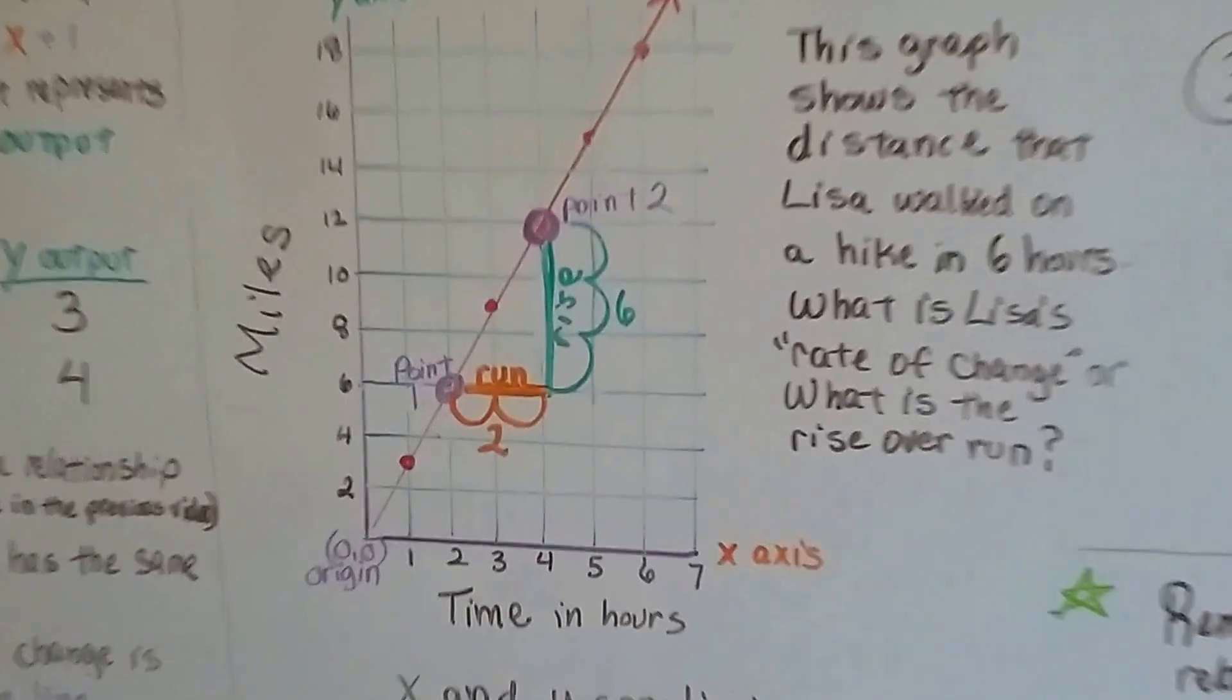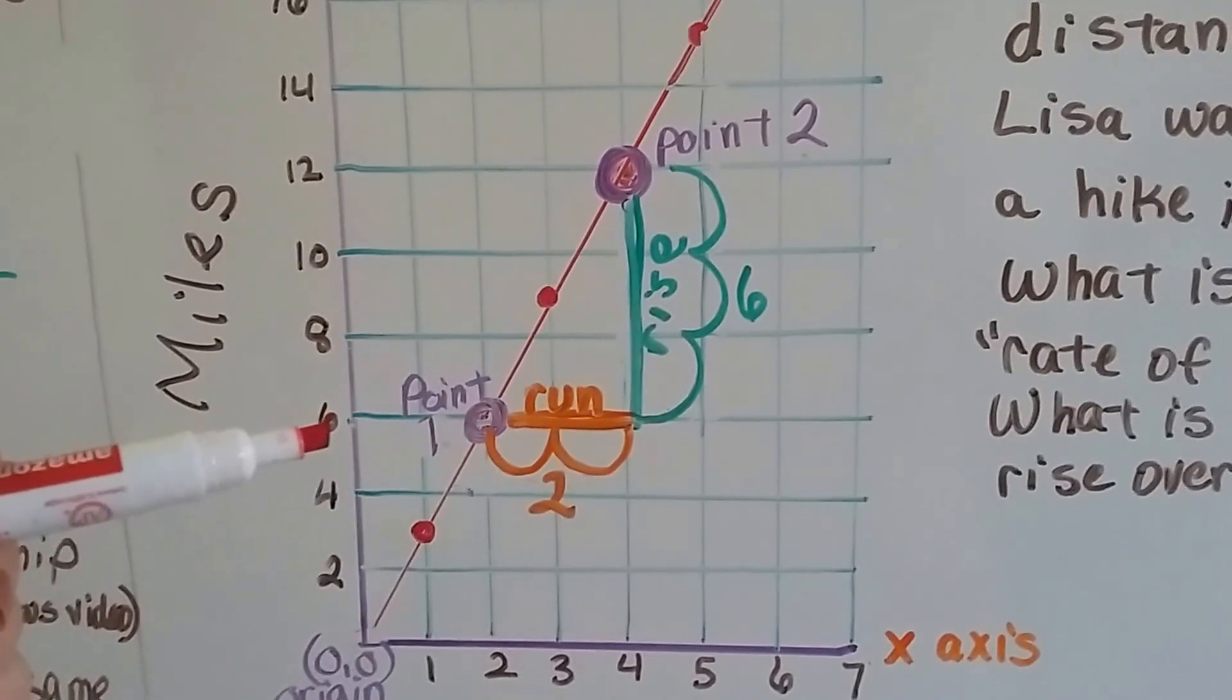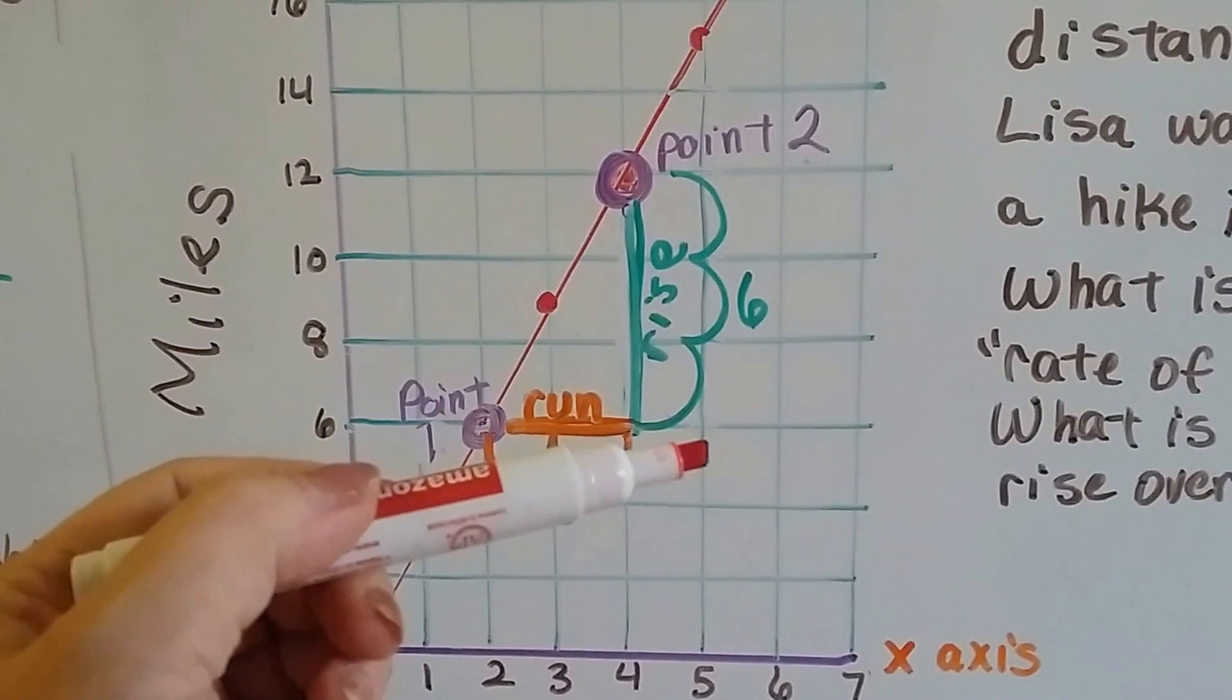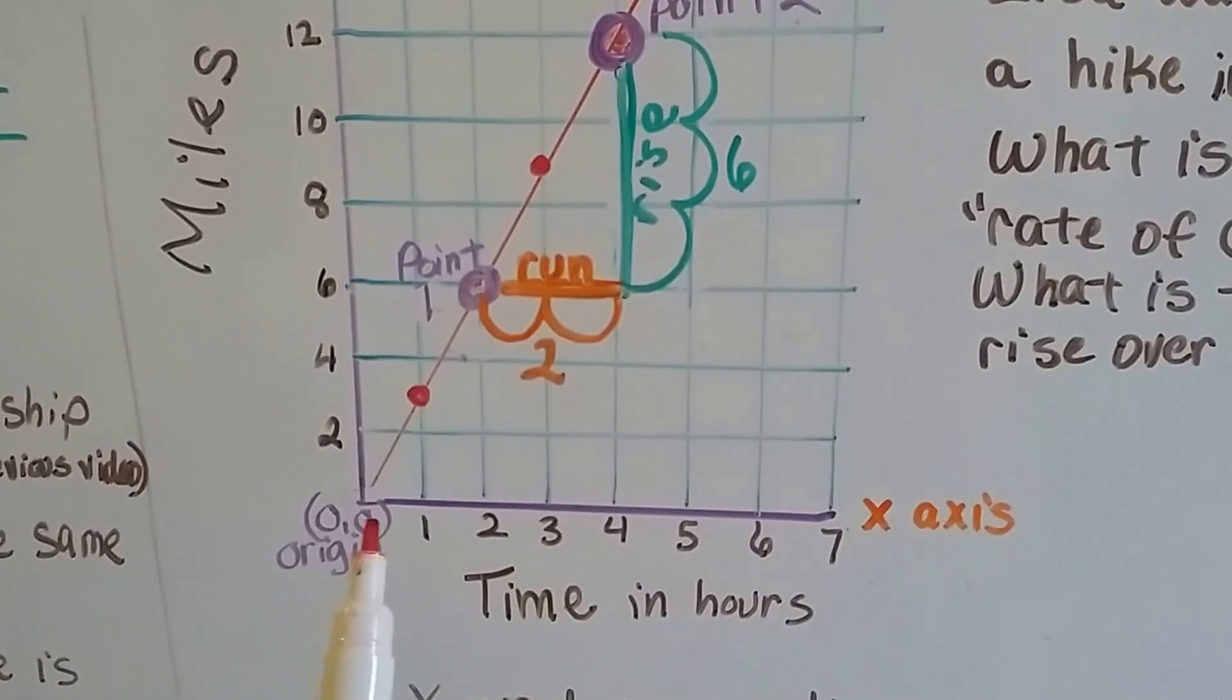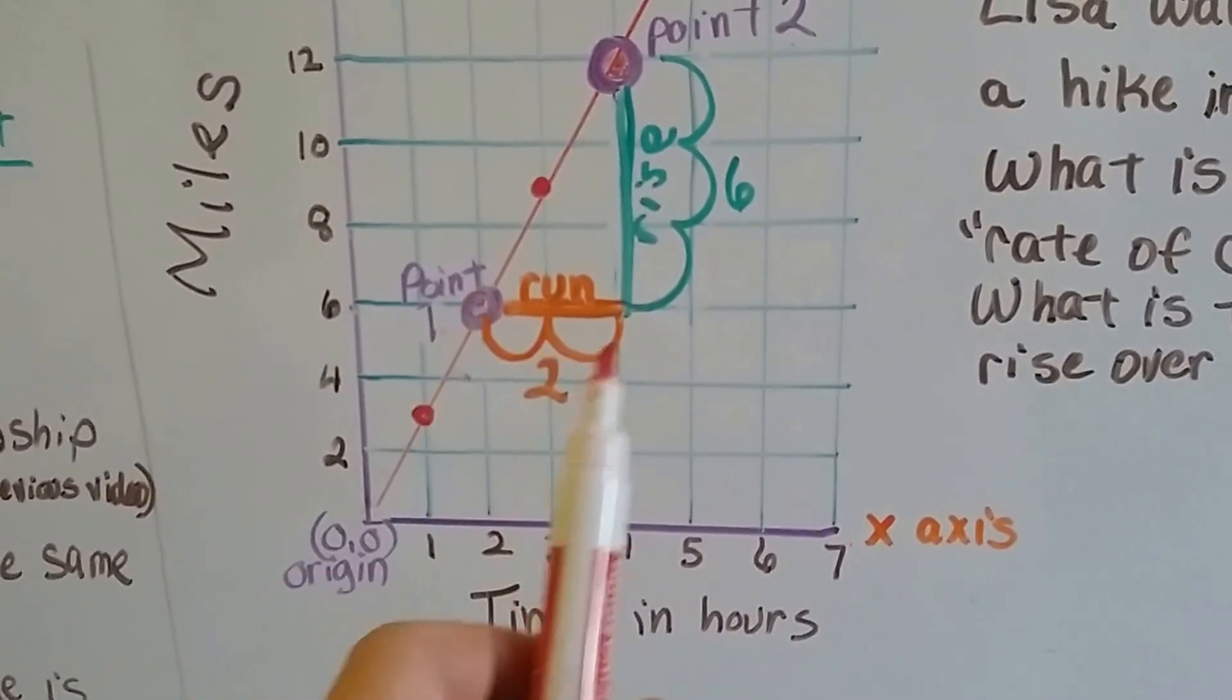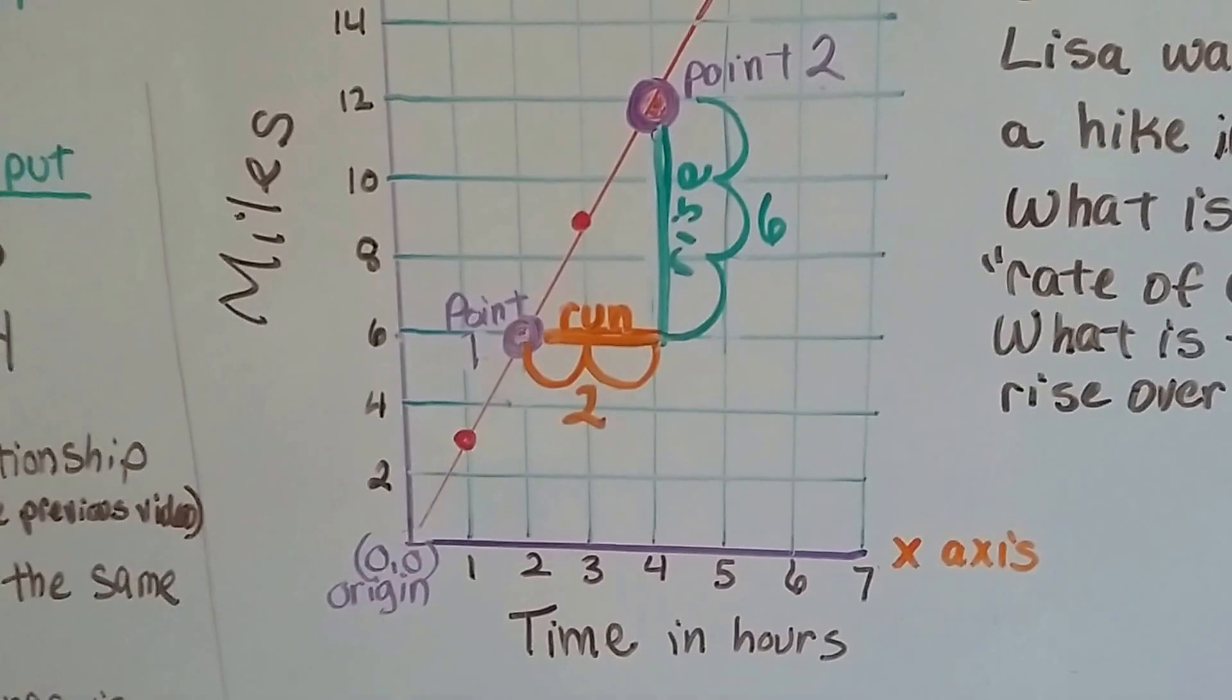Now if we look at this graph, we can actually see it. These go up by 2's, so each box represents 2. It goes 2, 4, 6, that's our rise. And our run is in single digits. 1, 2, 3, 4, 5, 6. So our run is 1, 2. We can just count it and see that the rise is 6 and the run is 2. We've got 6 over 2, we've got 3.